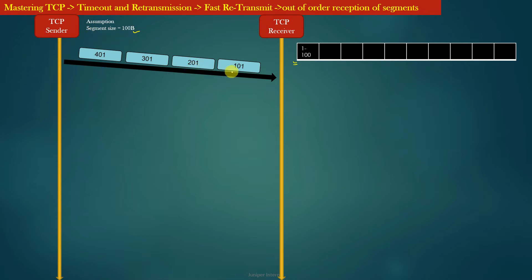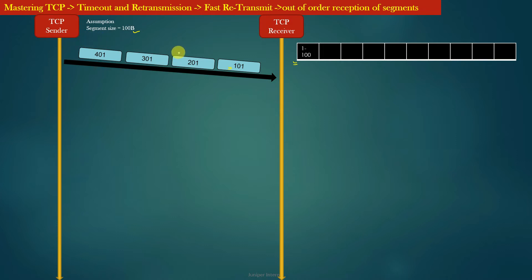Suppose the TCP sender sends four data segments towards the TCP receiver. The starting sequence numbers of these segments are 101, 201, 301, and 401. Depending on the amount of application data provided to the underlying TCP on the sending side, the TCP sender can generate multiple segments and inject them into the network. For now, let us just understand that the TCP sender has the capability to generate and send multiple data segments.